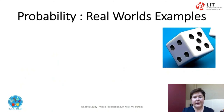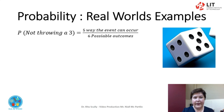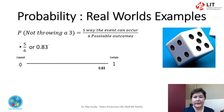Probability can also assess the risk of something not occurring. Let's look at the risk of not throwing a 3. This can be written as the event of not throwing a 3: there are 5 ways this can occur and 6 possible outcomes, so 5 over 6, or 0.83. Again, we can see this on the probability line.